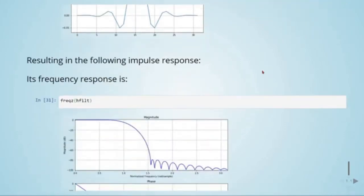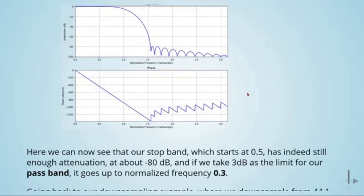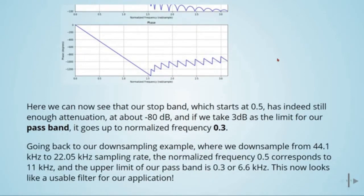We are multiplying the ideal filter and the Kaiser window, and here is the impulse response of our filter. The frequency response of this filter shows that our stop band, which starts at 0.5, has indeed sufficient attenuation at about minus 80 dB. And if we take the 3 dB limit for our pass band, it goes up to normalized frequency 0.3. Going back to our downsampling example from 44.1 kHz to 22.05 kHz, the normalized frequency 0.5 corresponds to 11 kHz and the upper limit of our pass band is 0.3, or 6.6 kHz. This now looks like a usable filter for our application.